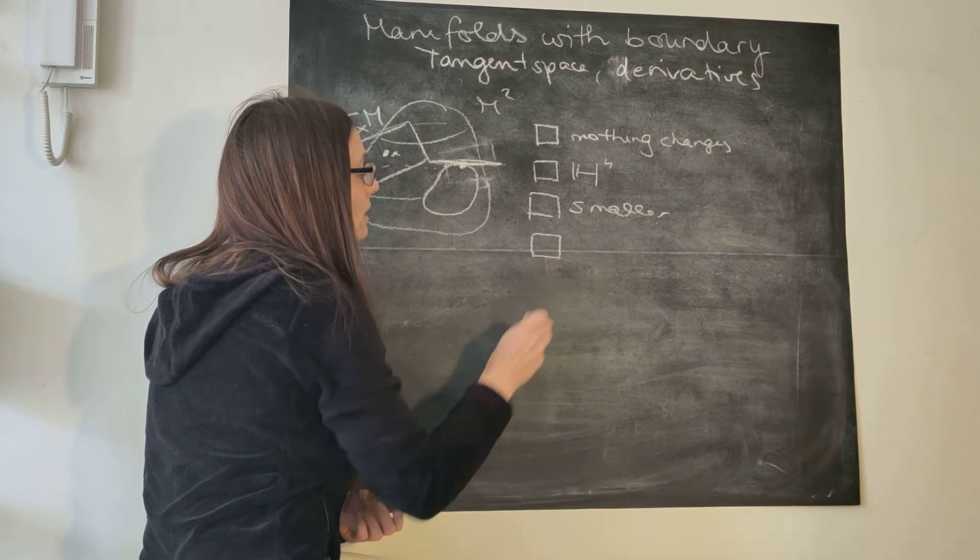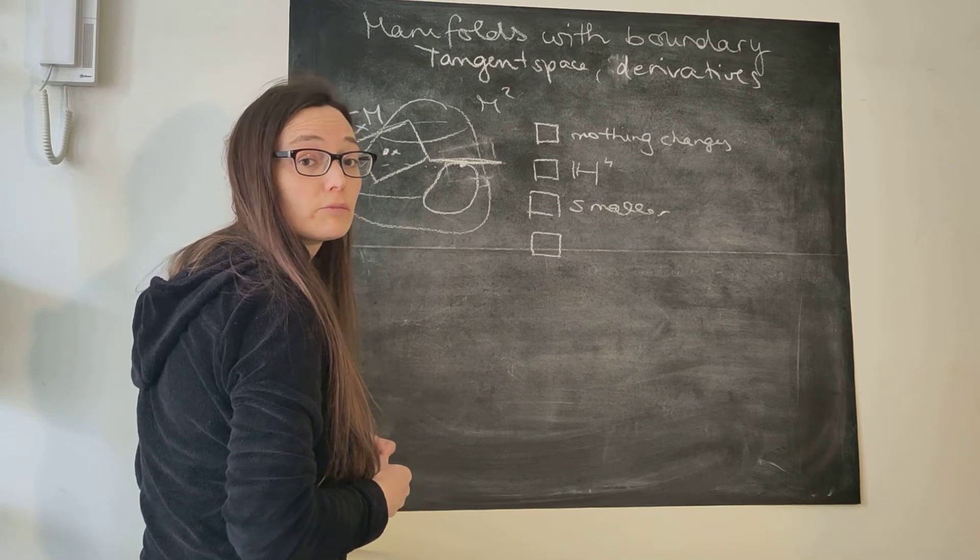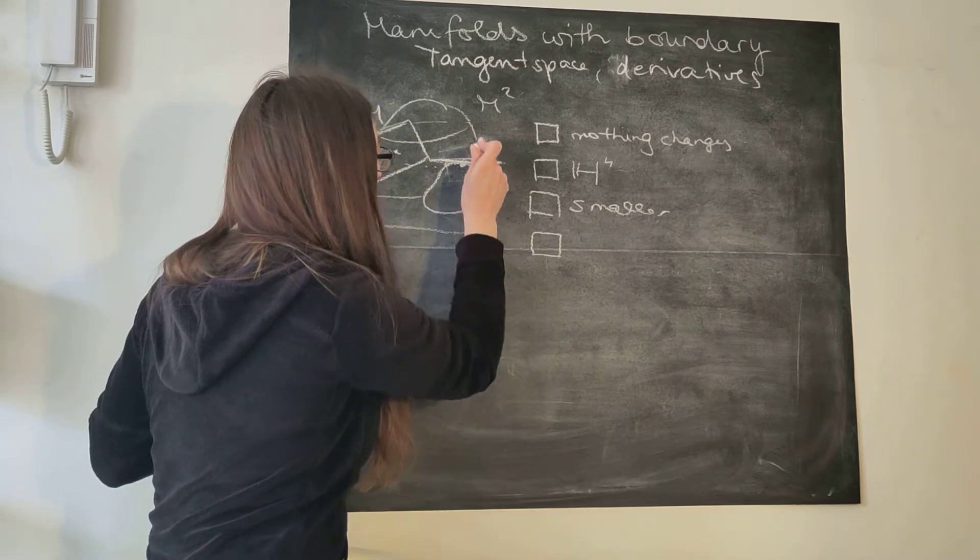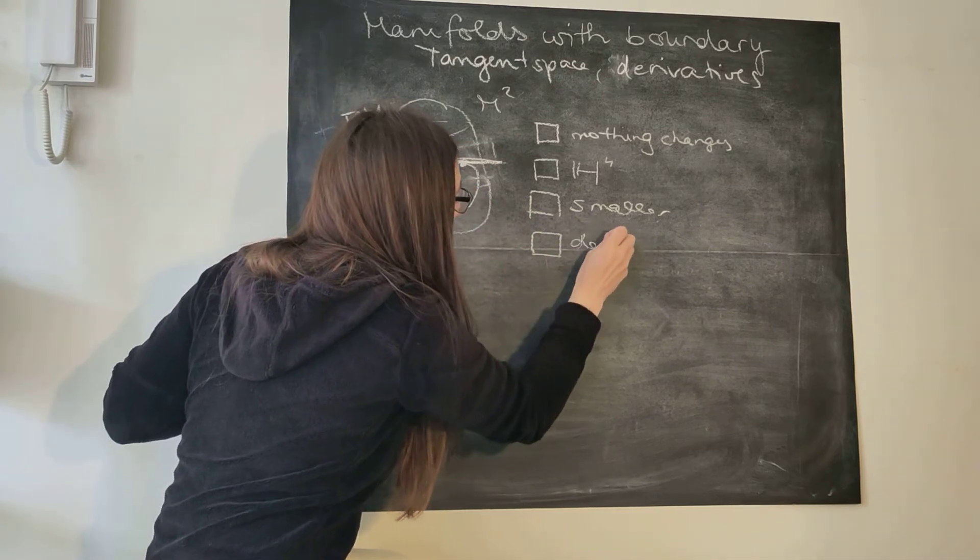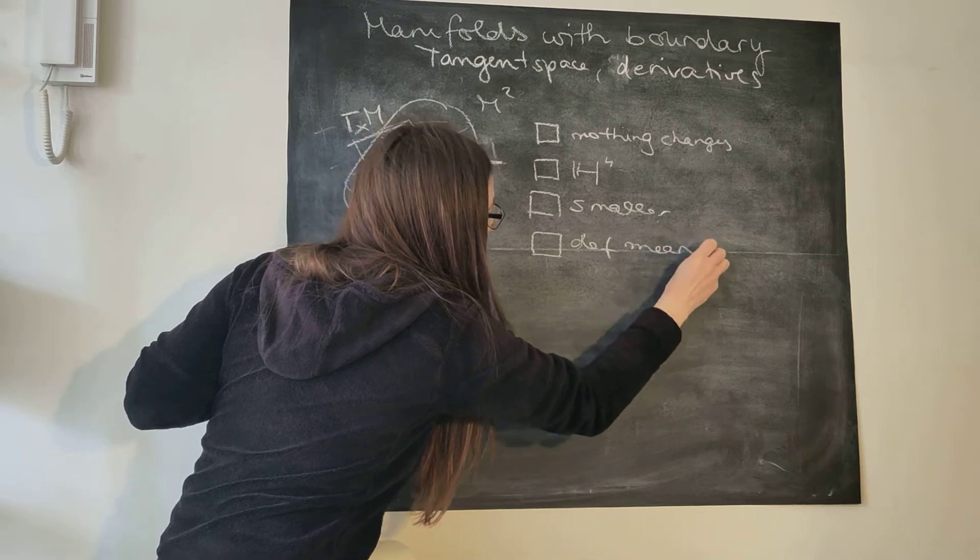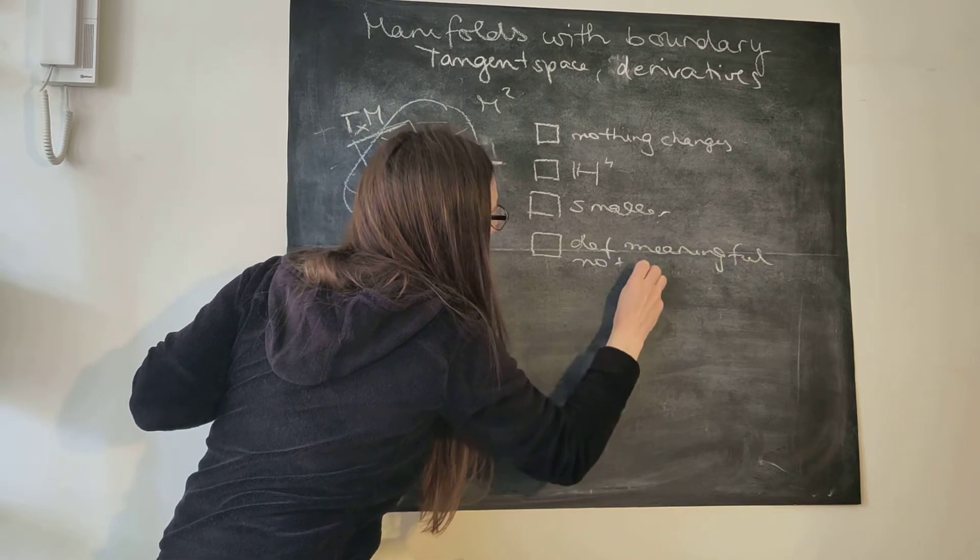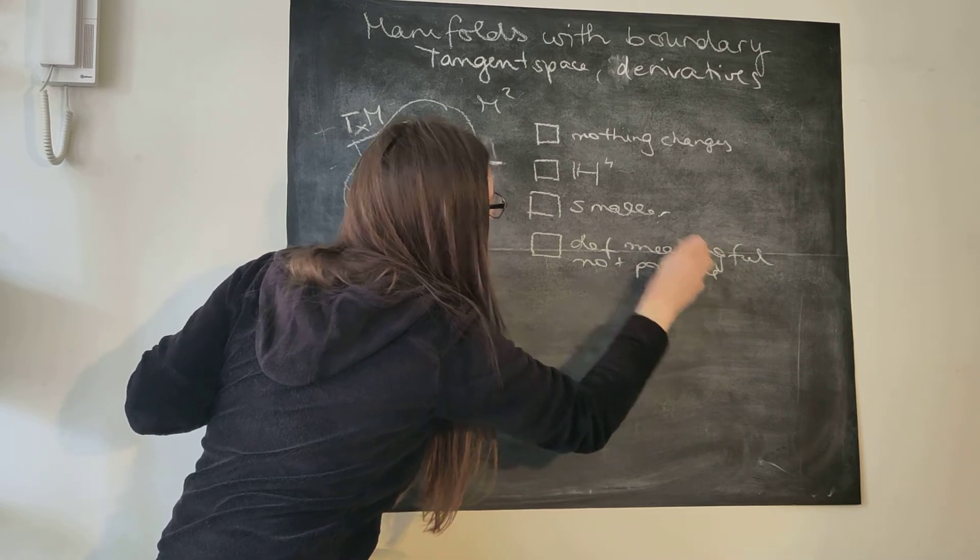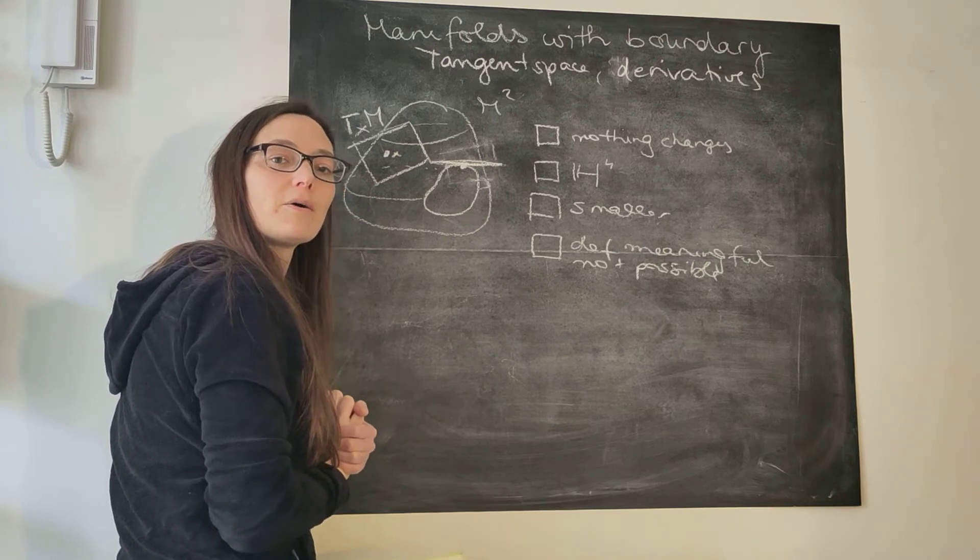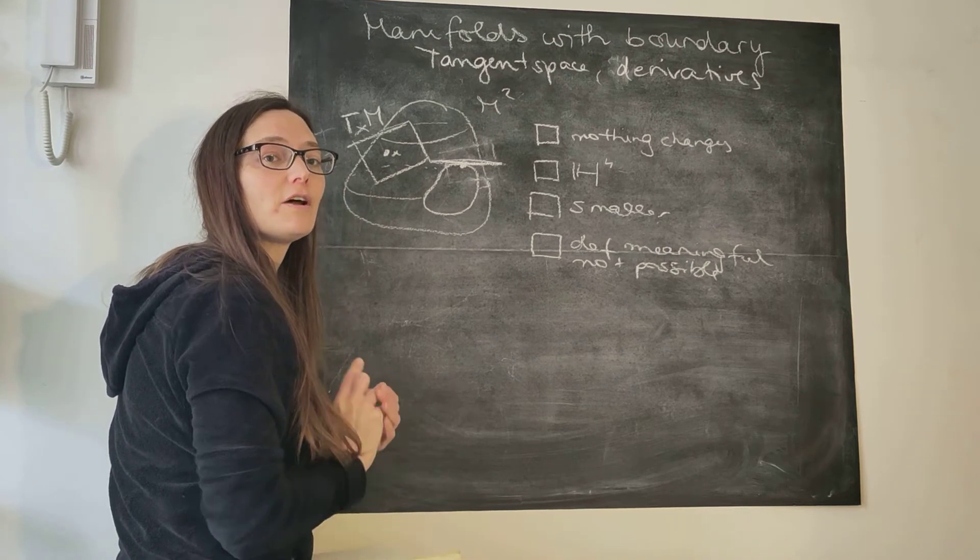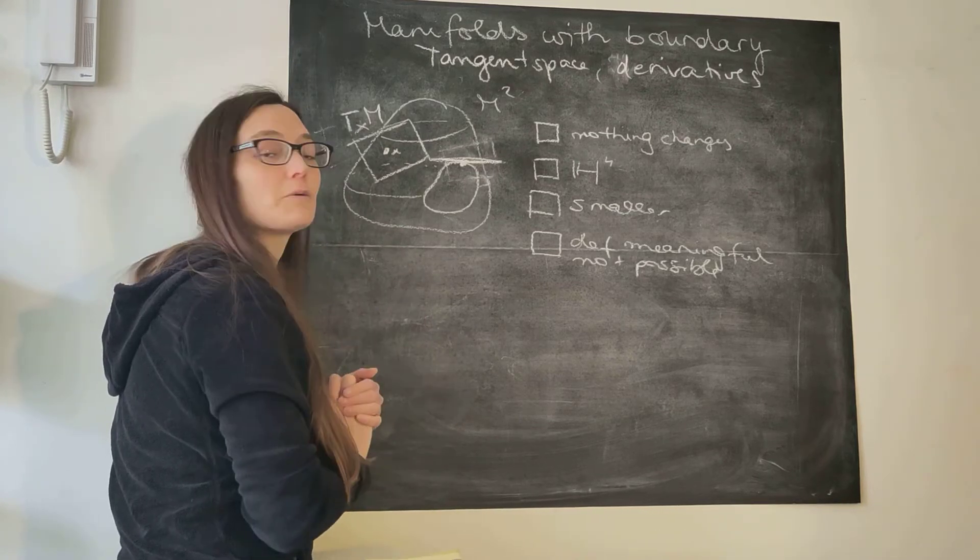Or do you say, none of this sounds right and we can't get a meaningful definition. Tangent spaces are just not defined for boundary points. Meaningful definition not possible. We can't make a consistent choice because there are so many things. So please make your pick or choose another thing if you can argue for it before we make an argument what we should define it like.